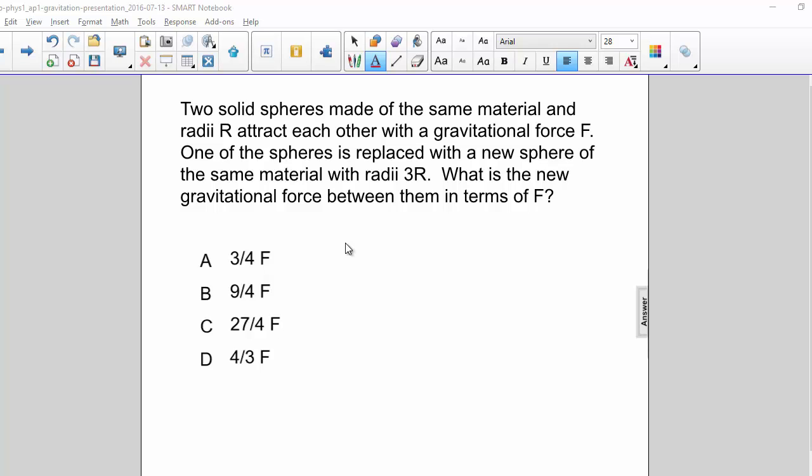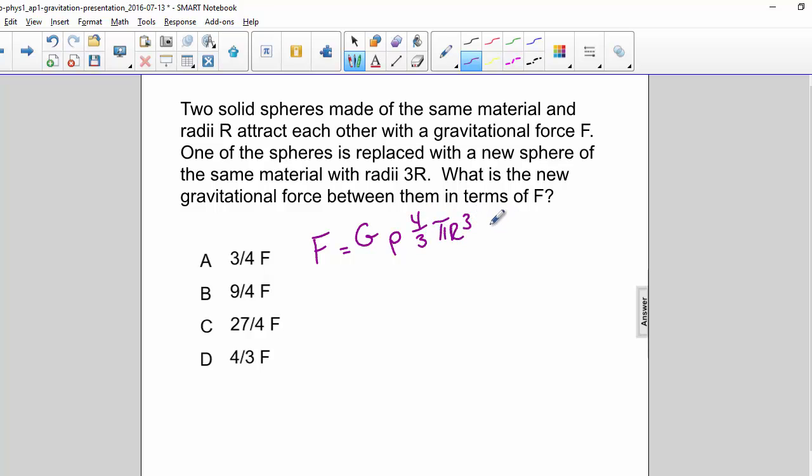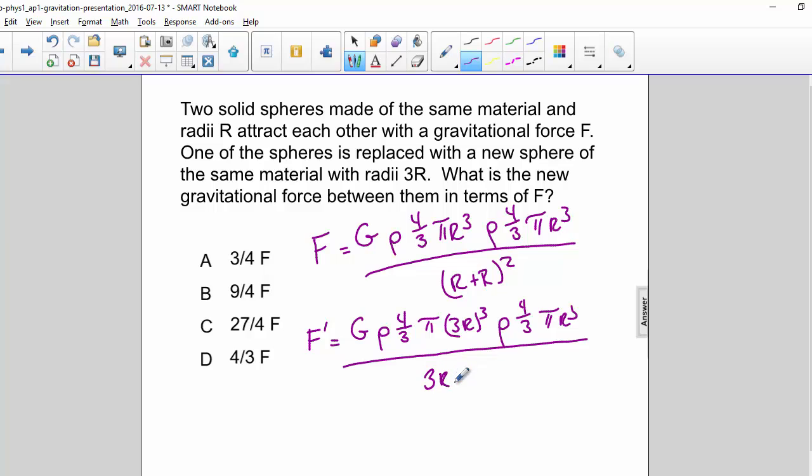What is the new gravitational force between them in terms of F? F equals G rho 4 thirds pi r cubed times rho 4 thirds pi r cubed divided by r plus r squared. F prime equals G rho 4 thirds pi 3r cubed times rho 4 thirds pi r cubed over 3r plus r squared.